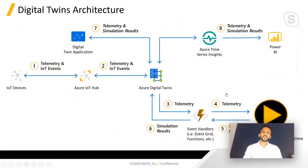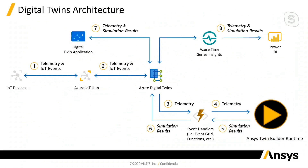Our audience is mostly developers and technical folks, and they'd like to understand how that integration with Azure Digital Twins works. So let's jump into the architecture diagrams. As you see in this architecture, we've got at the center Azure Digital Twins — that's where everything comes together. Sensor streams from IoT devices come in via Azure IoT Hub, and then through the Azure Digital Twin infrastructure, they are sent over to the Twin Builder runtimes. Twin Builder can then execute the runtime using these sensor streams, and generate additional virtual sensors, insights, and predictions that can be sent back. All of this information can be viewed inside Azure Time Series Insights or in a more consolidated way inside Power BI.